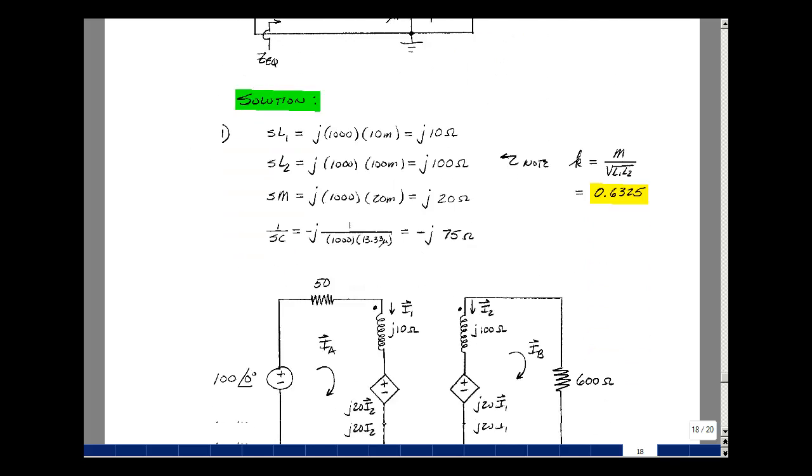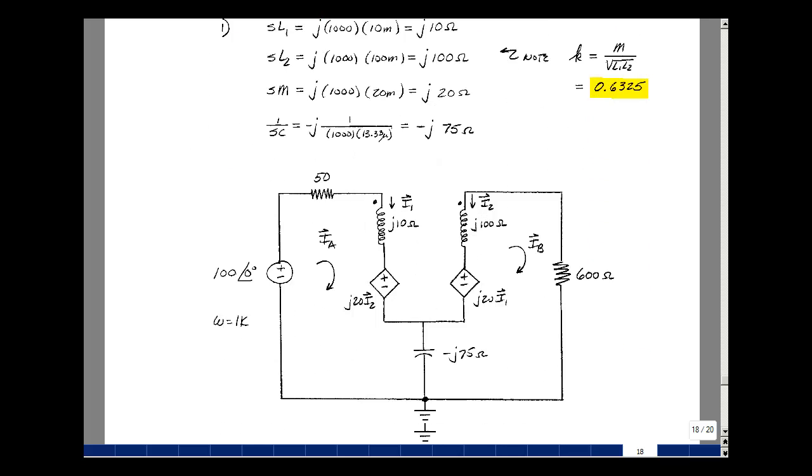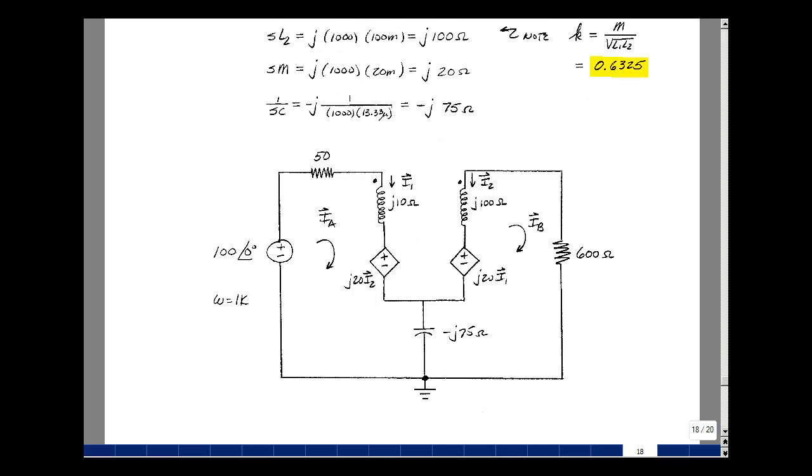So let's put our S-domain model in for the transformer. If you recall where our inductance L1 is, we're going to replace that by SL1, or in this case, J omega L1, and then that'll be in series with a controlled source with SM times the current I2, and that's equal to J 20 ohms times I2. The current I1 is flowing into the dot and coming out of it this way.